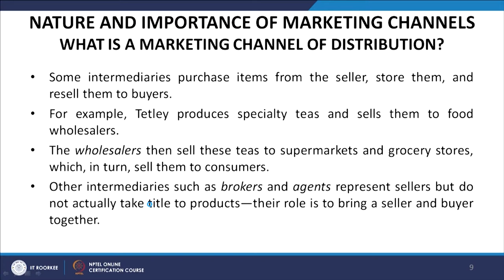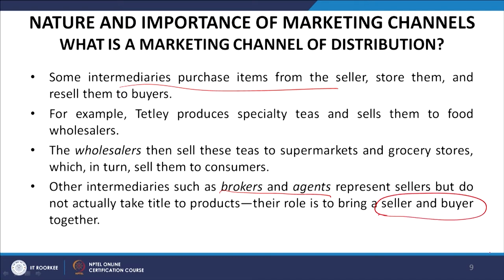A dealer is a more imprecise term than distributor that can mean the same as distributor, retailer, or wholesaler. Some intermediaries purchase items from the sellers, store them, and resell to the buyers. For example, Tetley produces specialty teas and sells them to food wholesalers, who then sell to supermarkets and grocery stores, which sell them to consumers. Other intermediaries such as brokers and agents represent sellers but do not actually take title of the product — their role is simply to bring a seller and buyer together.